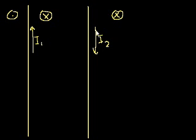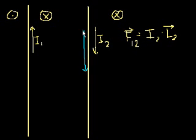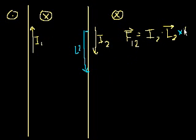Now, the force created by current 1 on current 2 — that's just the convention I'm using — is equal to current 2 times some length vector L2 along the wire. This is a vector because it has a magnitude of length and a direction, and it goes in the same direction as the current. Cross that with the magnetic field created by wire 1.